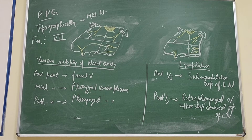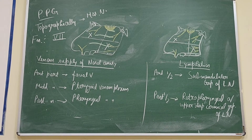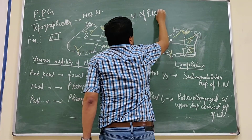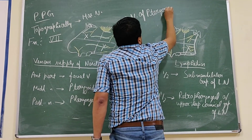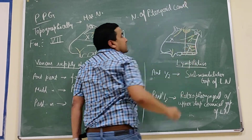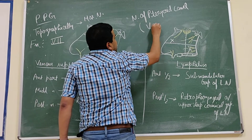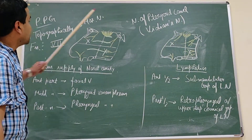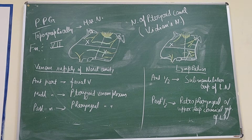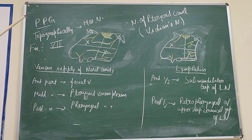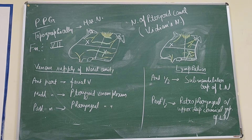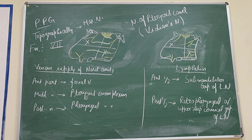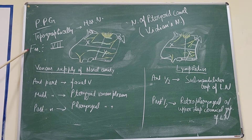The fibers come from the superior salivatory nucleus, then there is the greater petrosal nerve and the deep petrosal nerve, which unite to form the nerve of the pterygoid canal. This nerve of the pterygoid canal relays in the pterygopalatine ganglion, and from the ganglion the postganglionic fibers arise and are distributed through the maxillary nerve. So the secretomotor pathway of the nasal cavity mucosal glands is related to the pterygopalatine ganglion and comes from the facial nerve.